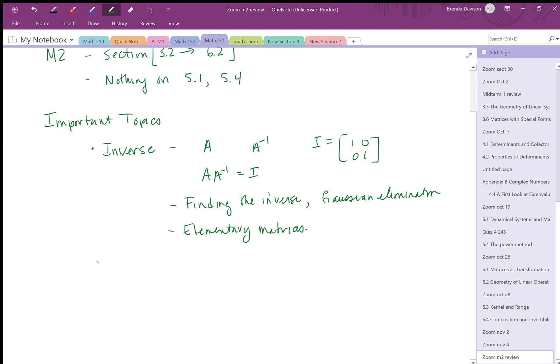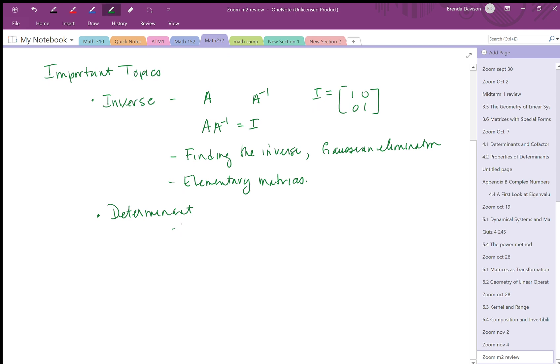The next important topic would be the idea of the determinant. What is a determinant? What do you use it for? We know how to calculate the determinant of a 2 by 2 matrix: if we have [a,b; c,d], the determinant is ad minus bc.